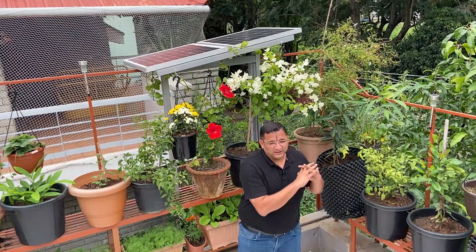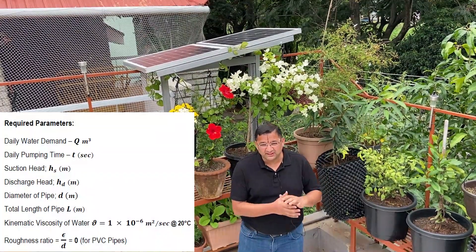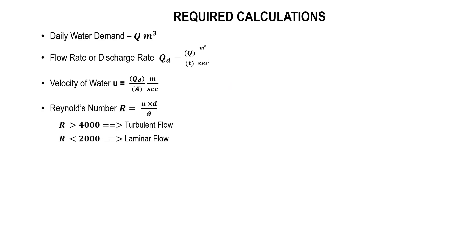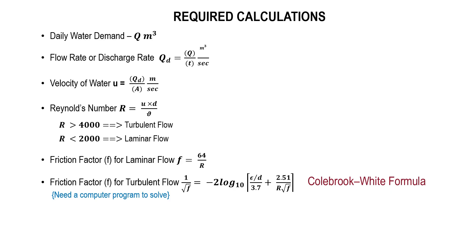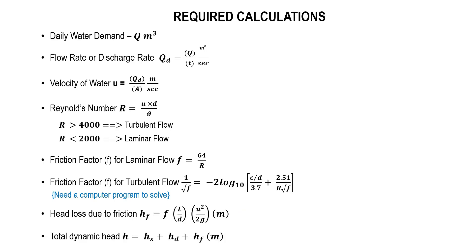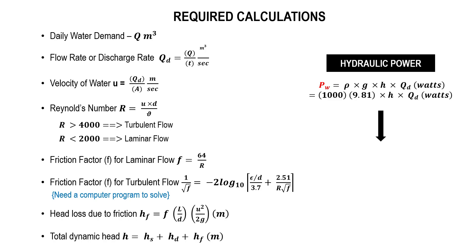Strictly speaking, to design a pump to lift water we need many parameters. First, we need to know the total volume of water required per day, then estimate the flow rate depending on pumping duration, then determine the velocity of water, then calculate the Reynolds number, and determine whether the flow is turbulent or laminar. Depending on the flow type, we estimate the friction factor using the Colebrook-White formula, then determine the friction head loss via the Darcy-Weisbach formula. Finally, we plug everything into the hydraulic energy formula: density of water × acceleration due to gravity × total dynamic head × flow rate, which gives the pump capacity required.